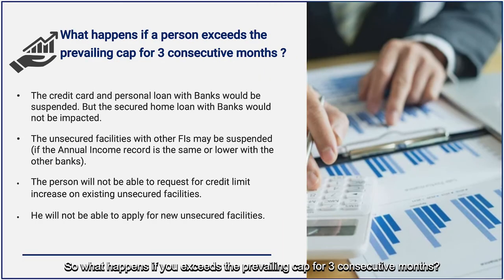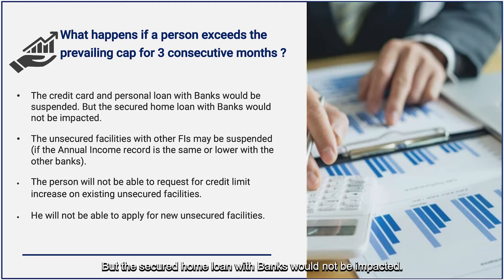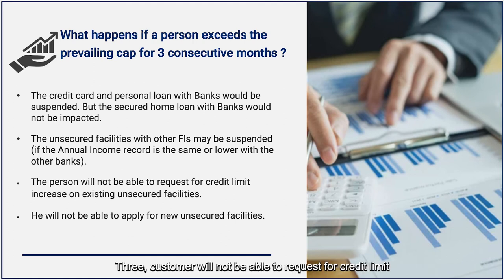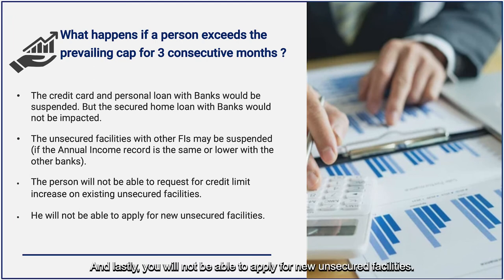So what happens if you exceed the prevailing cap for three consecutive months? First, credit cards and personal loans with banks will be suspended, but the secured home loan will not be impacted. Second, unsecured facilities with other financial institutions may be suspended too. Third, you will not be able to request any credit limit increase on existing unsecured facilities. And lastly, you will not be able to apply for any new unsecured facilities.